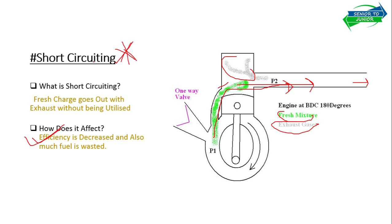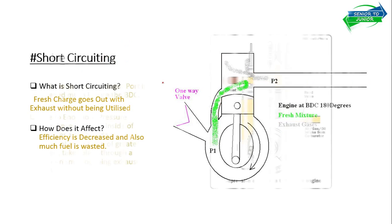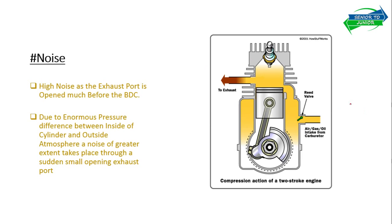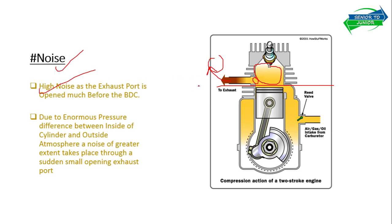The next disadvantage is noise. In a two-stroke engine, before the piston reaches BDC, the exhaust port gets opened. Inside the cylinder there is huge pressure, while outside is atmospheric pressure. When this large pressure difference suddenly gets a small opening, a blast-like explosion noise takes place. The exhaust port opens much before BDC, and those high-pressure gases rush out to the atmosphere, creating significant noise.